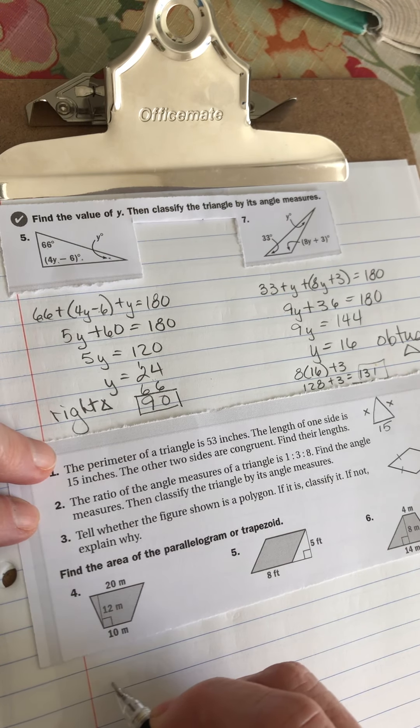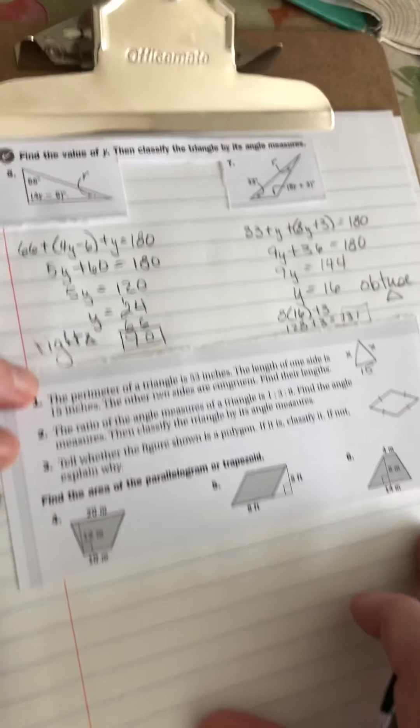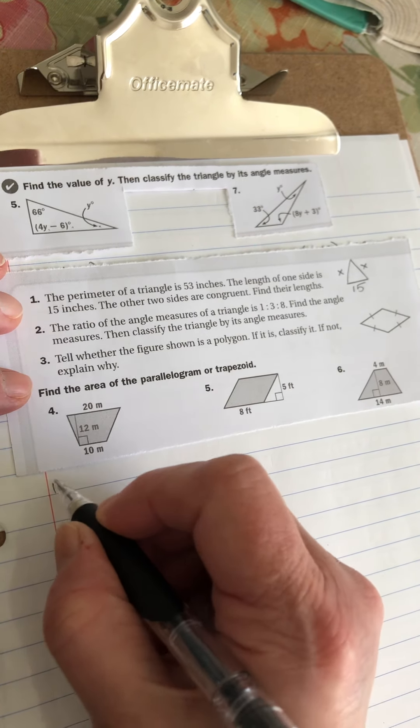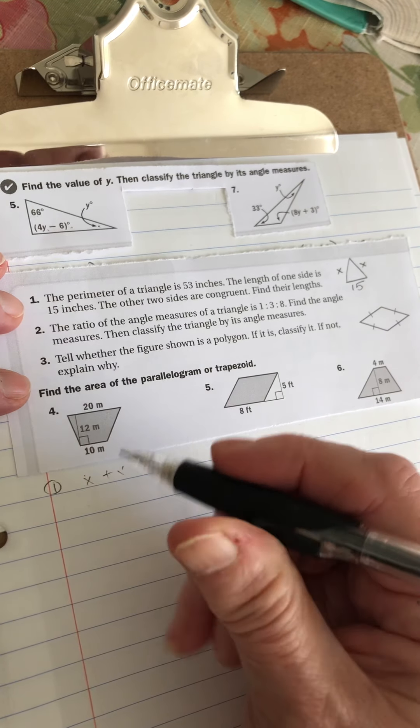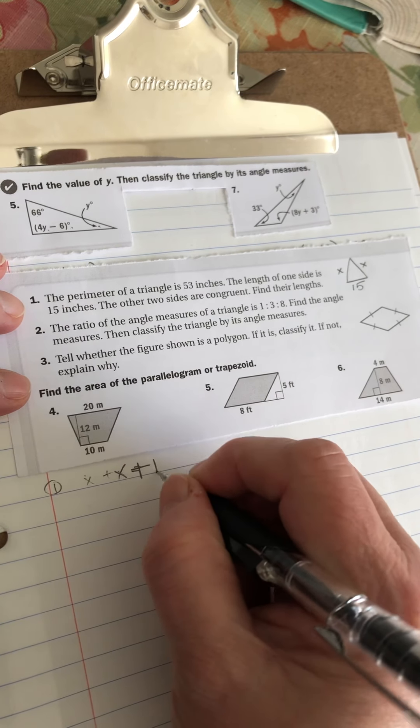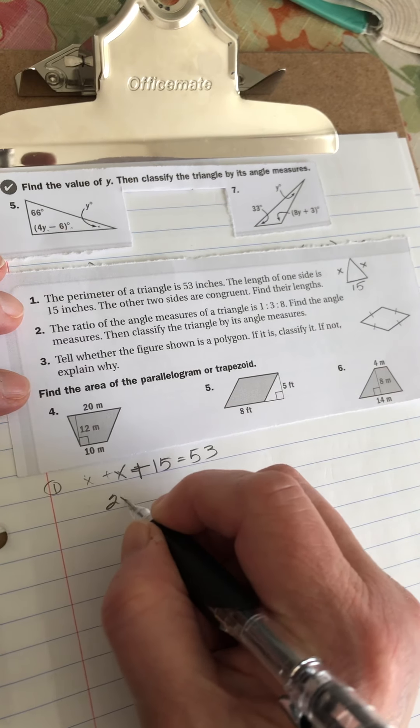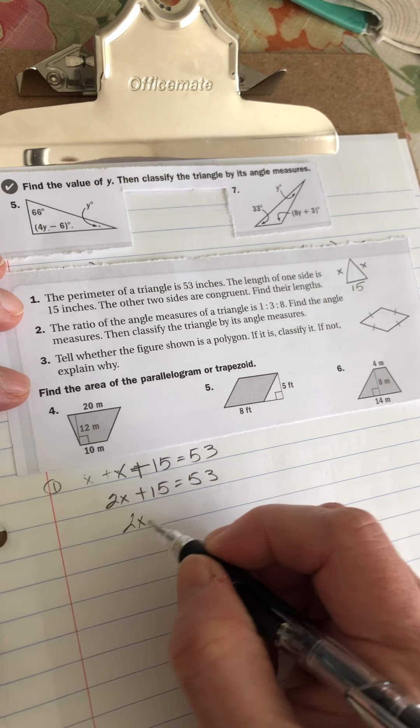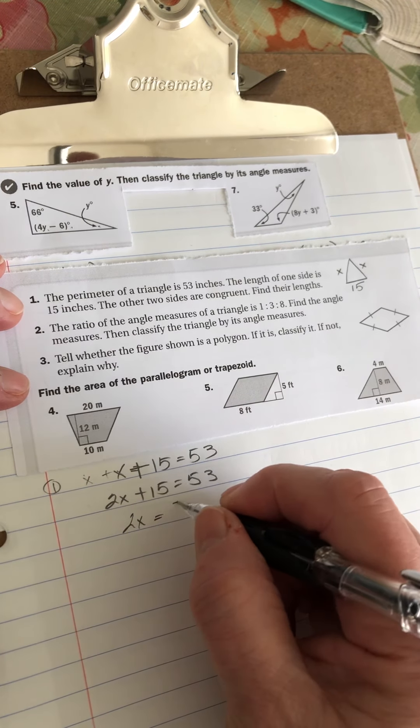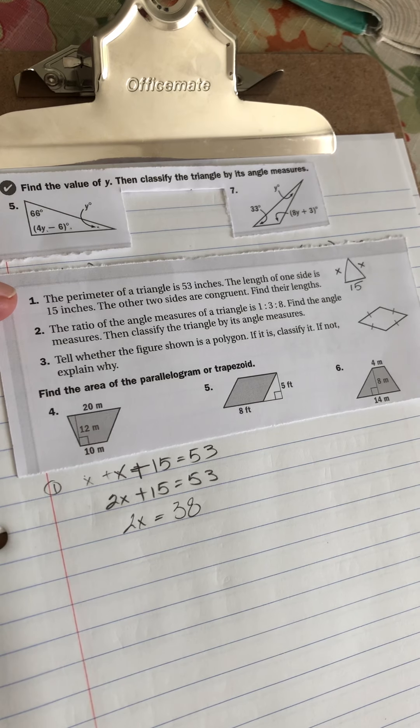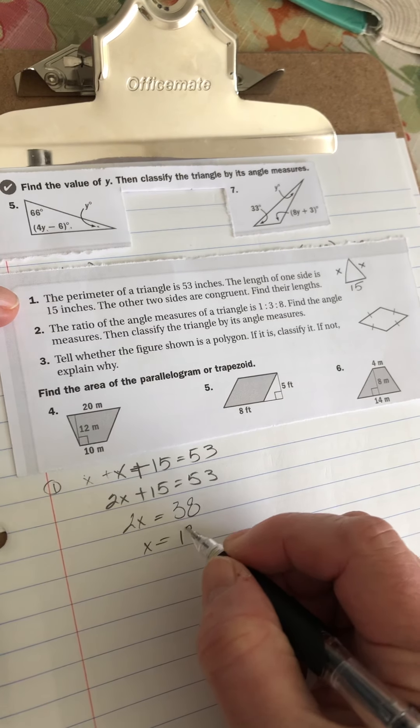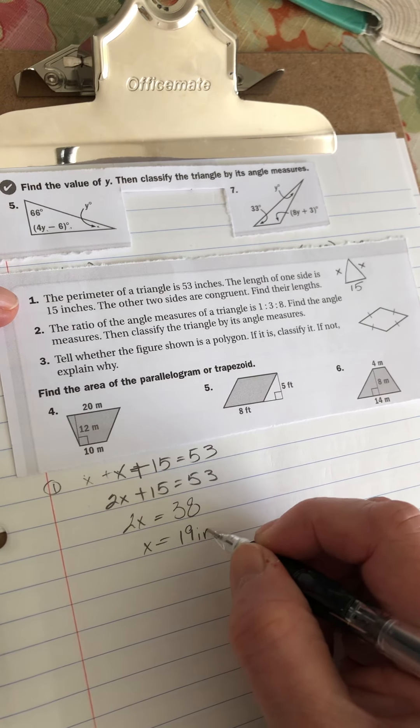So from that, I know that my equation would be, I'm going to move this up. Sorry, I'm going to cover that up, but you can look at it later. My equation for this number one would be x plus x plus 15 equals 53. Or 2x plus 15 equals 53. So when I subtract 15 from both sides, that's going to give me 38. And again, if you don't know that you can subtract it or you can use your calculator. That's what you've got one for. Divide that by two and x equals 19. So my other two sides are 19 inches.